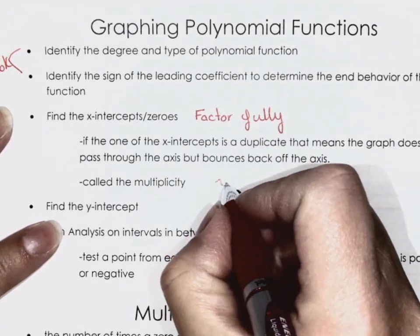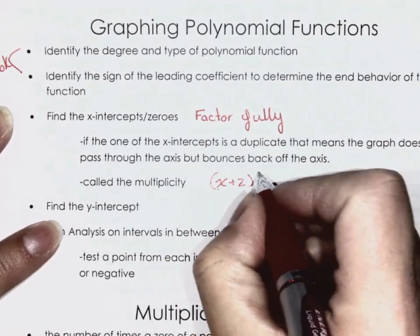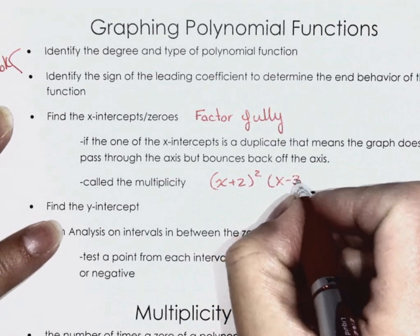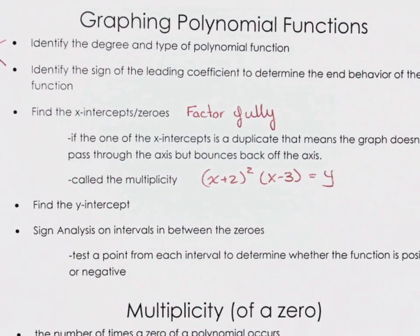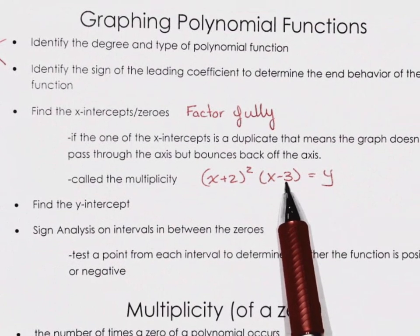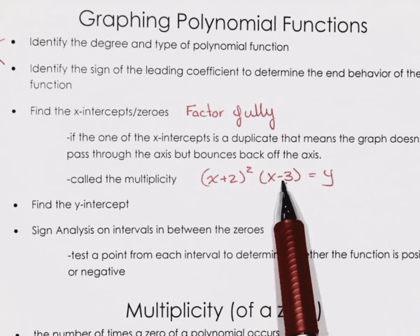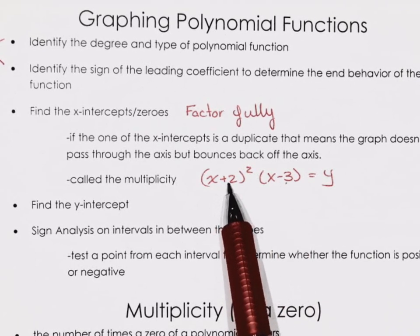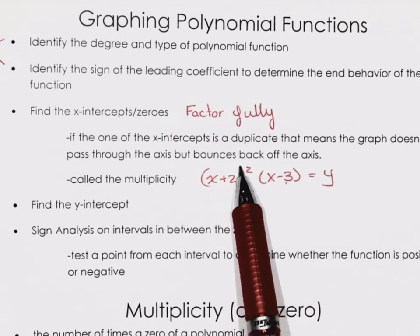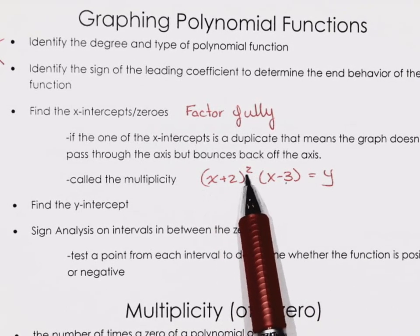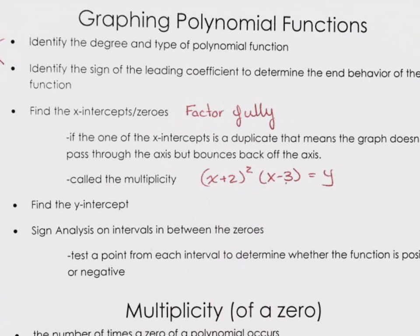For example, say you had a graph like this. This has a multiplicity of one because there's one factor that's (x − 3), so the x-intercept will be at positive 3. Here we have a multiplicity of two because there are two factors from the squared term, and the x-intercept will be at negative 2 — but something funky has to happen at that point.